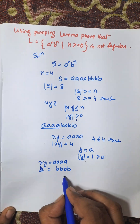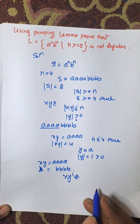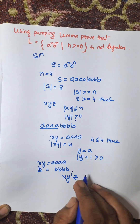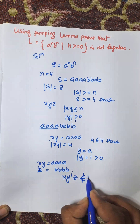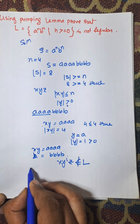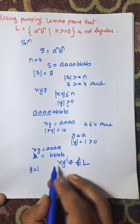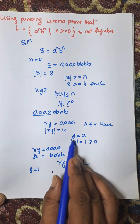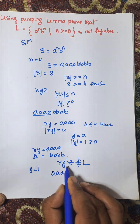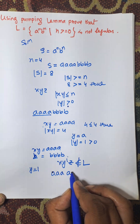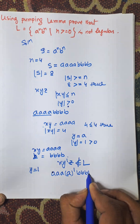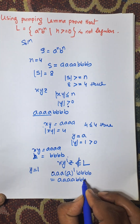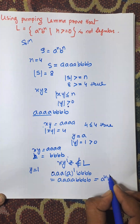Now according to the rule, x y to the power of i, z is considered. We need to find such an i which does not belong to L. Consider i equal to 1. Here X is A, A, A and Y is A. So x y to the power 1 z gives 4 A's and 4 B's, which belongs to a to the power 4, b to the power 4, which belongs to L.